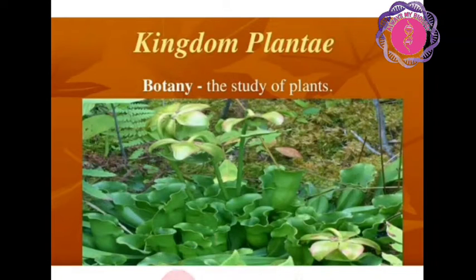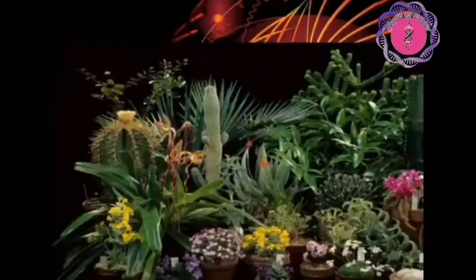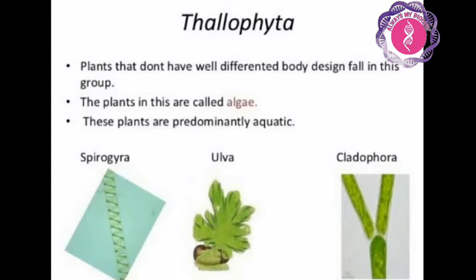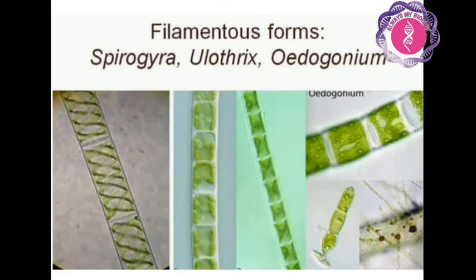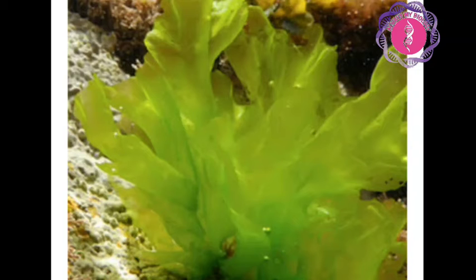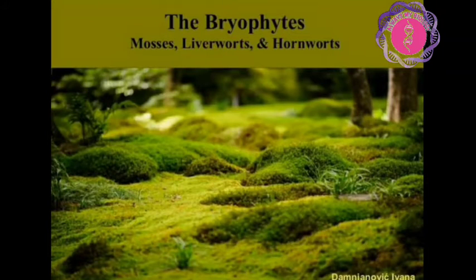It consists of 3 types: Thallophyta, Bryophyta, and Pteridophyta. In Thallophyta, plants do not have any well differentiated body parts; they are commonly called as algae, and they mainly live in water. For example, Ulothrix, Ulva, and Spirogyra.